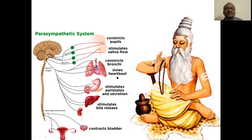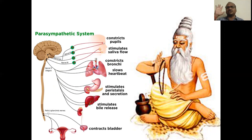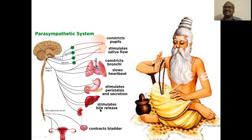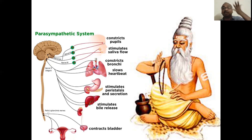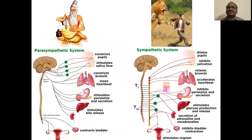Slows the heartbeat. Stimulates the peristaltic movement — all gastrointestinal secretions will flow out, you will get free motion. Stimulates the bile release for digestion. Bile is very important for the digestion of cholesterol. All GI secretions will be released for proper digestion. Contracts the bladder — you can go to pass urine freely. All these things you have to write in the examination. Parasympathetic is pleasant state.